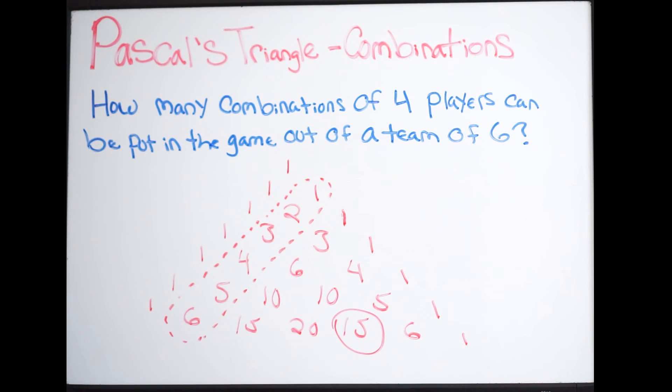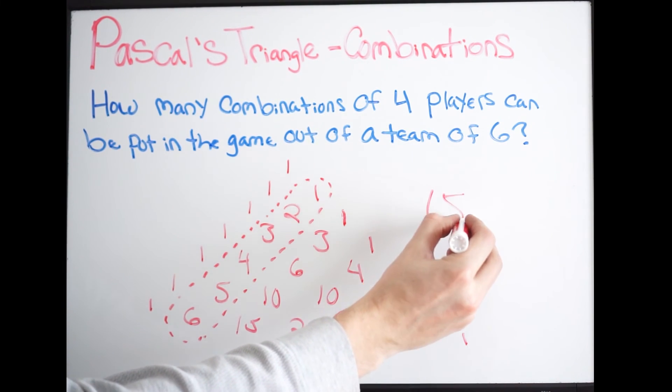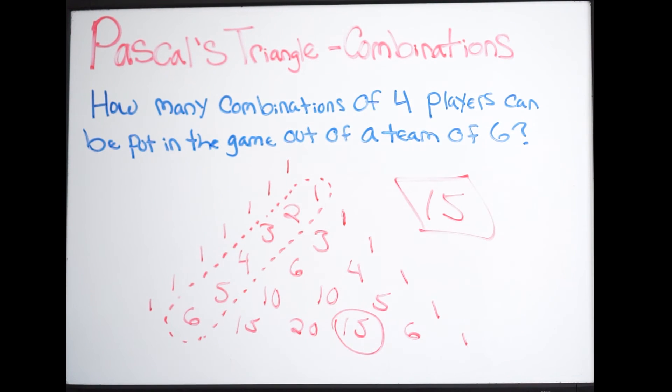This is our answer. Fifteen. There are fifteen combinations of choosing four players out of the six. And you're done. So that's how you use Pascal's triangle for these combination problems.